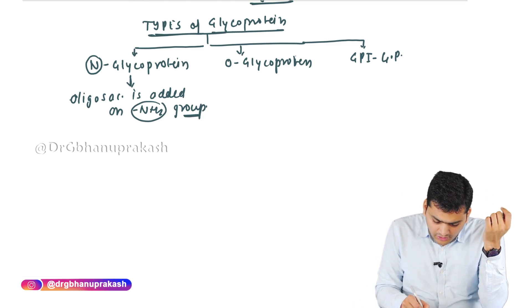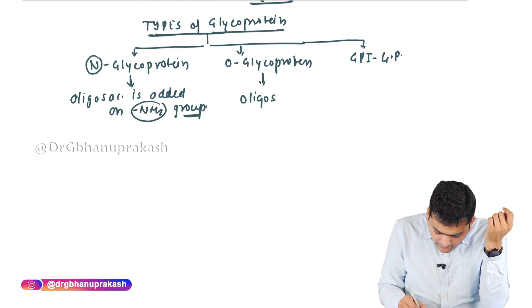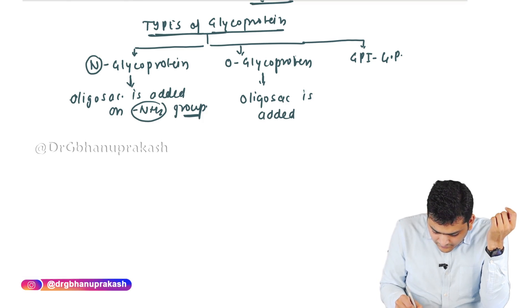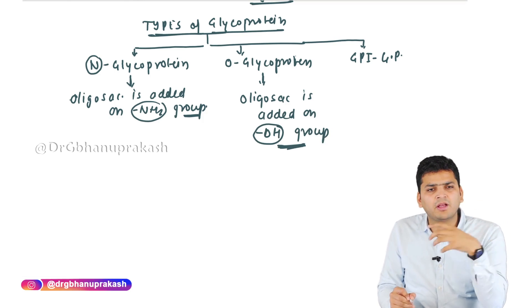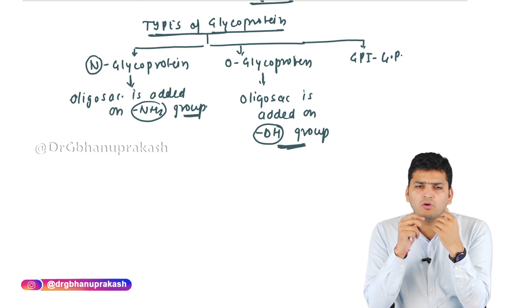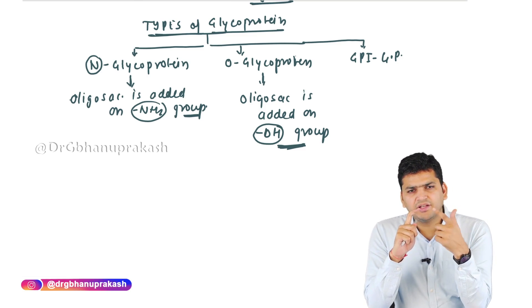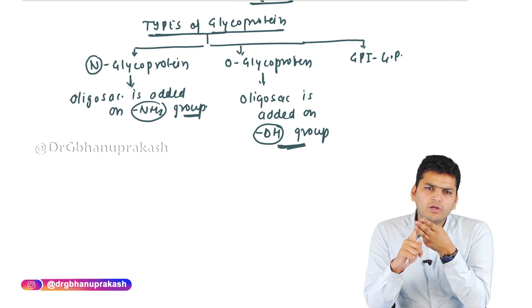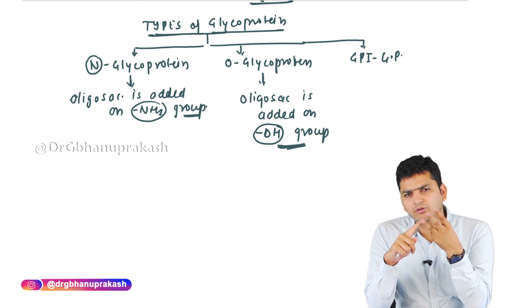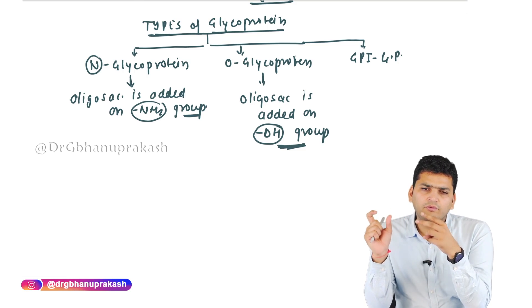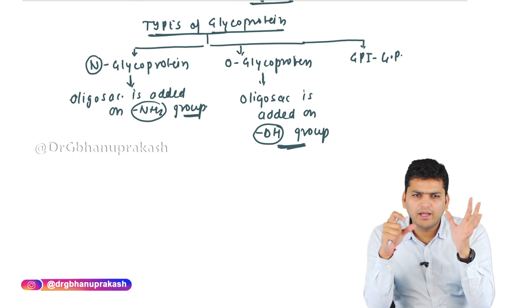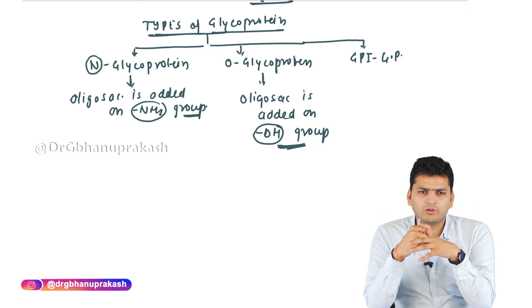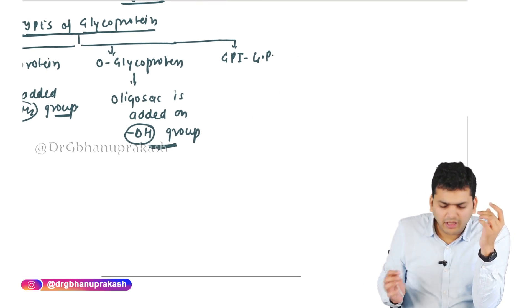If the oligosaccharide is added on the hydroxyl group (–OH), that is called the O-type of glycoprotein. The hydroxyl group is not present in all amino acids — it is found in serine, threonine, and tyrosine. You can only make the O-type glycoprotein with these, and particularly with serine and threonine.